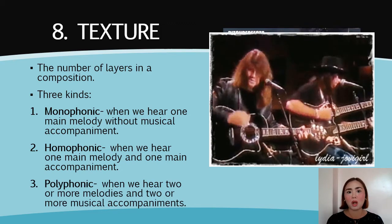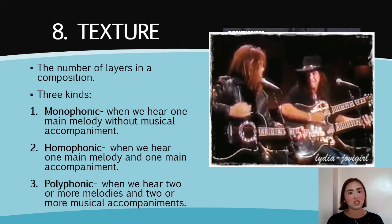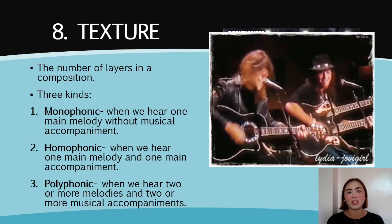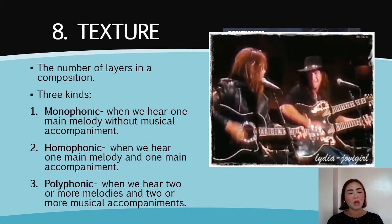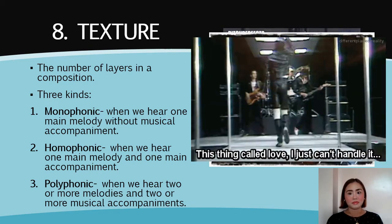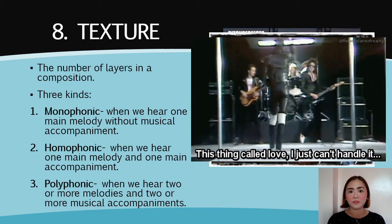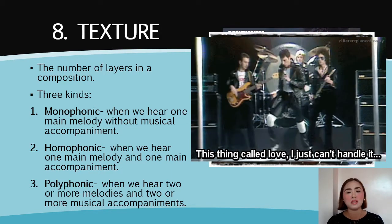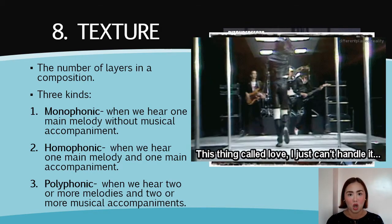The last type of texture is what we call polyphonic texture. When we say polyphonic texture, we hear two or more main melodies and two or more musical accompaniments. An example under the polyphonic texture would be bands — rock bands. You hear two or more main melodies coming from the singers and two or more musical accompaniments.